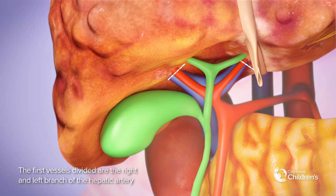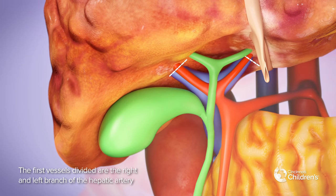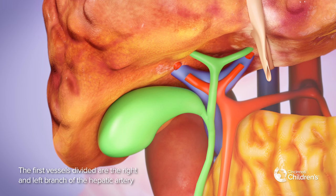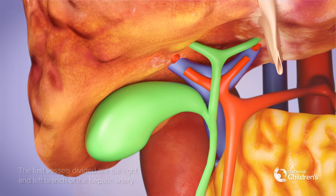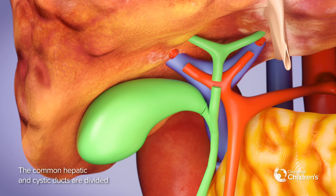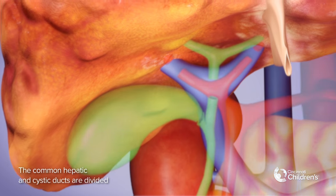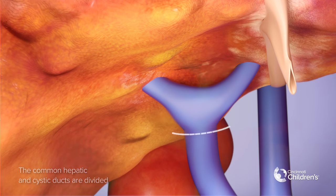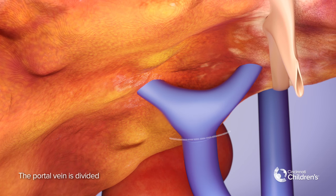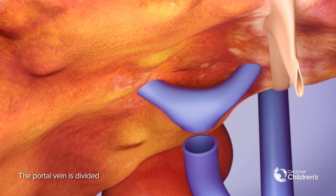We first divide the right and left branch of the hepatic artery. The common hepatic and cystic ducts are divided. The portal vein is divided.